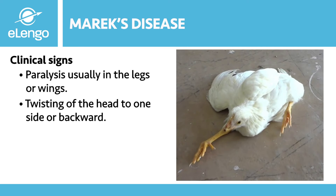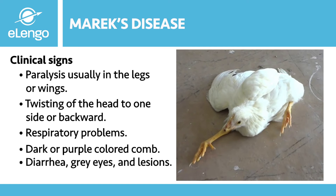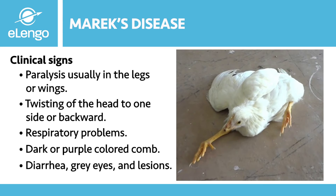You'll also notice twisting of the head to one side or backward, and respiratory problems such as labored breathing. You'll also notice a darkened or purple comb due to lack of oxygen — remember that the neck is twisted and the bird is having respiratory problems, so oxygen circulation is a challenge. In progressive stages, you'll observe diarrhea, and if you look at the eye closely, you'll notice it is grey-green in color. You can also notice lesions around the feather follicles of the bird.